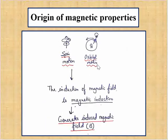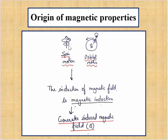These diagrams show the spin motion and orbital motion of the electron. This is the spin motion and this is the orbital motion. This motion generates a magnetic field, and the induction of a magnetic field is called magnetic induction.